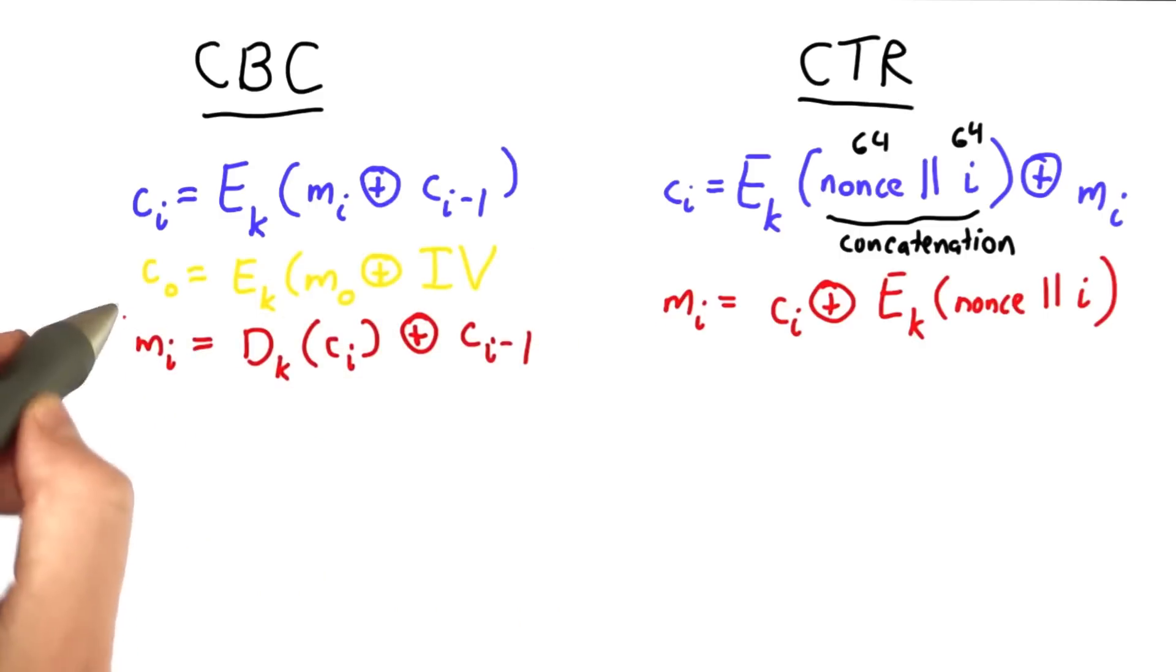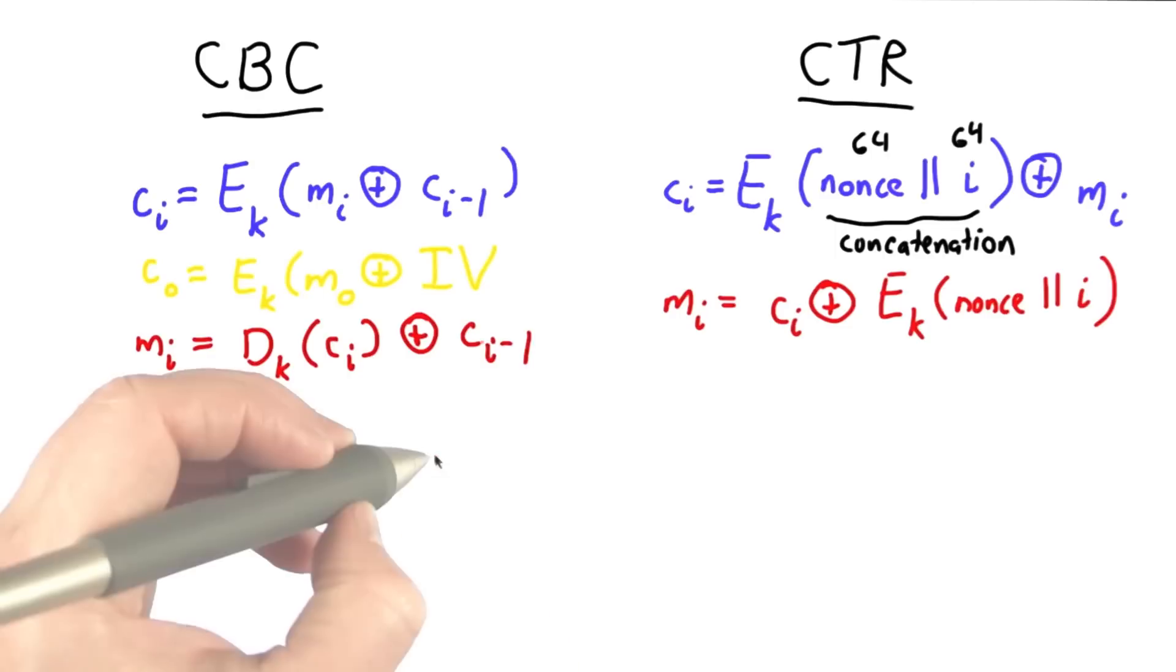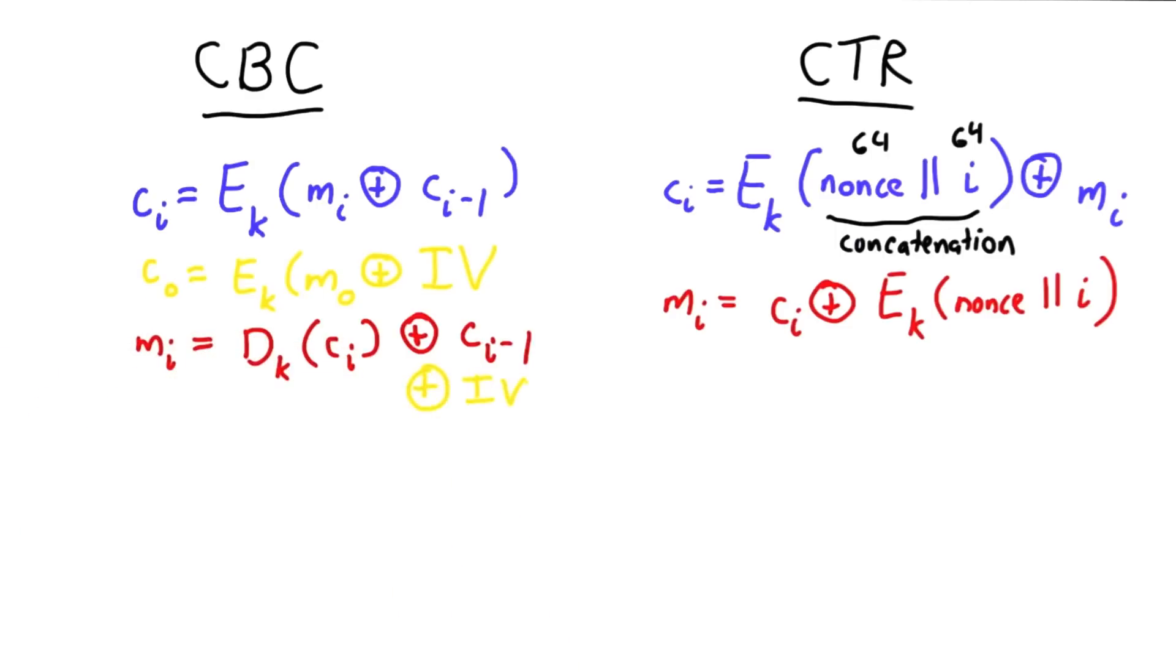With CBC mode, the ith message block is the result of decrypting the ith ciphertext block and XORing that with the previous ciphertext block. Or, in the case of the very first block, XORing that with the IV.